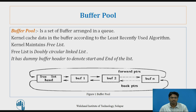A buffer pool is nothing but a set of buffers arranged in a queue. The kernel caches the data in the buffer according to the least recently used algorithm, meaning when any process wants to access some buffer, that request is sent to the kernel to access that buffer, and the kernel will use the least recently used algorithm.